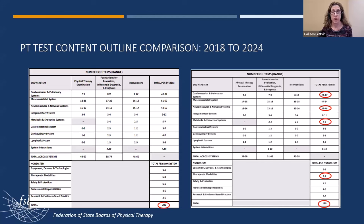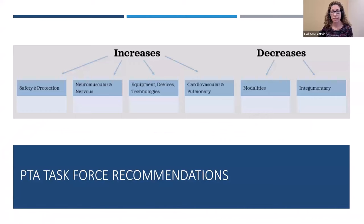The metabolic and endocrine system will also decrease. The task force said it's not really feasible to write PT examination items on the metabolic and endocrine system because PTs primarily perform screenings rather than direct examination, and tests of this system are primarily conducted in the lab and not by a practicing PT. They also wanted to keep osteoporosis within metabolic and endocrine. Switching gears, the PTA task force recommended relative increases in four categories: non-system safety and protection, the neuromuscular and nervous system, equipment devices and technologies, and cardiovascular and pulmonary system — with a relative decrease in therapeutic modalities and the integumentary system.